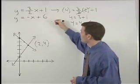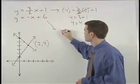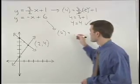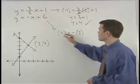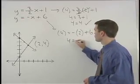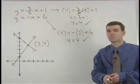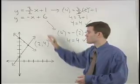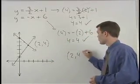For our second equation, y is 4 equals negative x, which is negative 2, plus 6. So 4 equals 4. And our second equation checks. So the solution to this system of equations must be the point 2, 4.